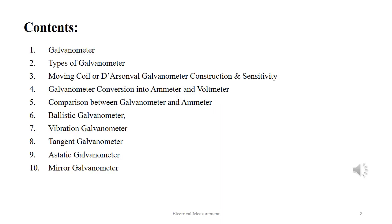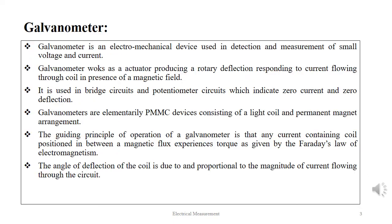As part of the discussion we will talk about the principles of galvanometer, the types of galvanometer, the construction mechanism of moving coil galvanometer, galvanometric conversion into ammeter and voltmeter, and comparison between a galvanometer and an ammeter. Then we will talk about ballistic, vibrational, tangent, astatic and mirror galvanometers.